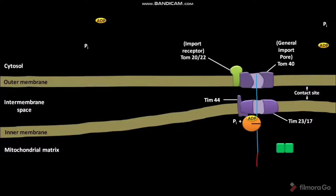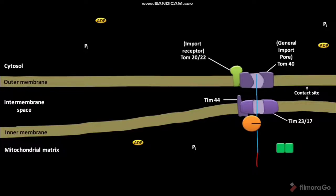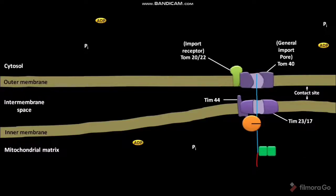The hsc70 then binds to the translocating precursor protein. hsc70 and TIM44 together translocate the protein into the mitochondrial matrix. The ADP and Pi are then released into the matrix. In the mitochondrial matrix, an enzyme called matrix processing protease then binds to the matrix targeting sequence of the precursor protein and cleaves it.